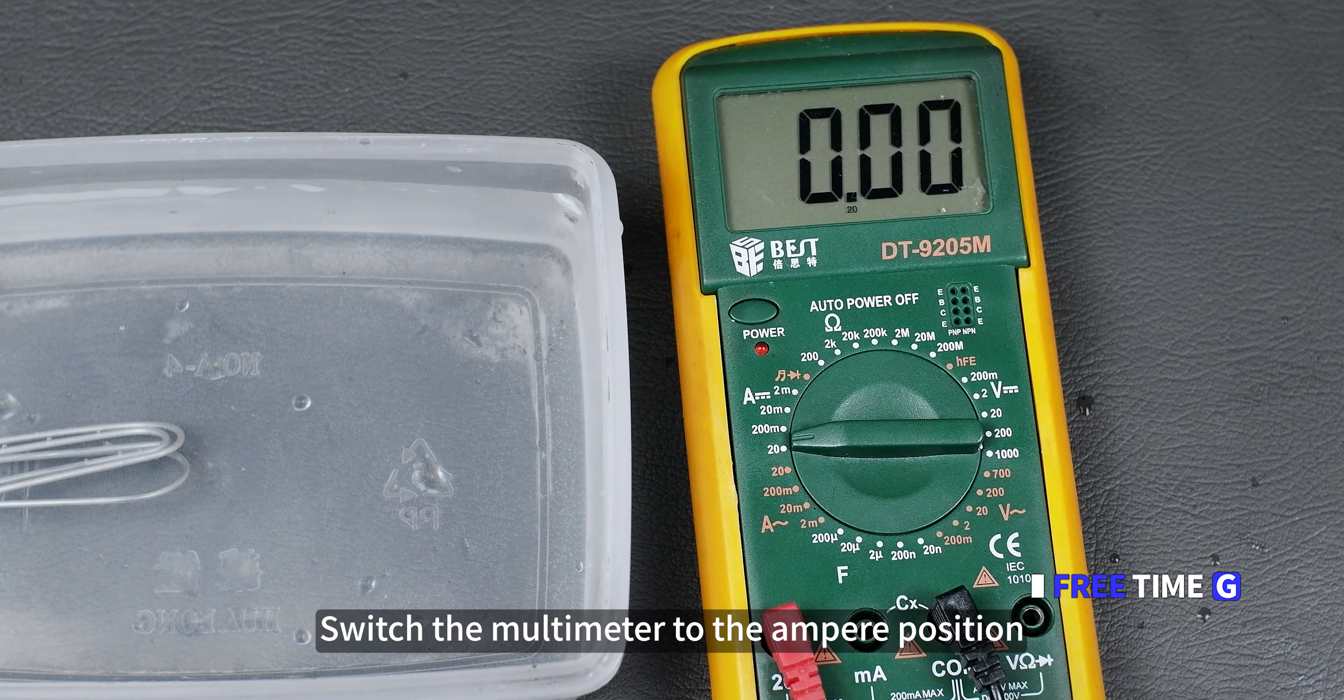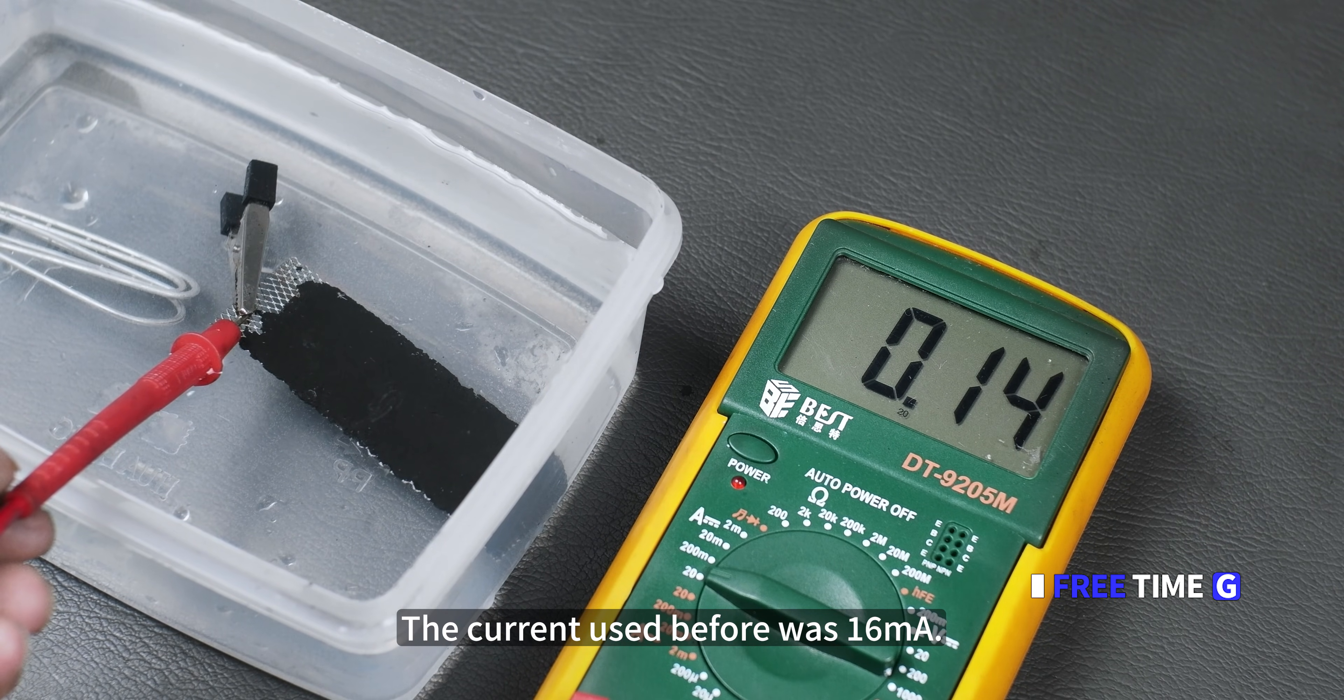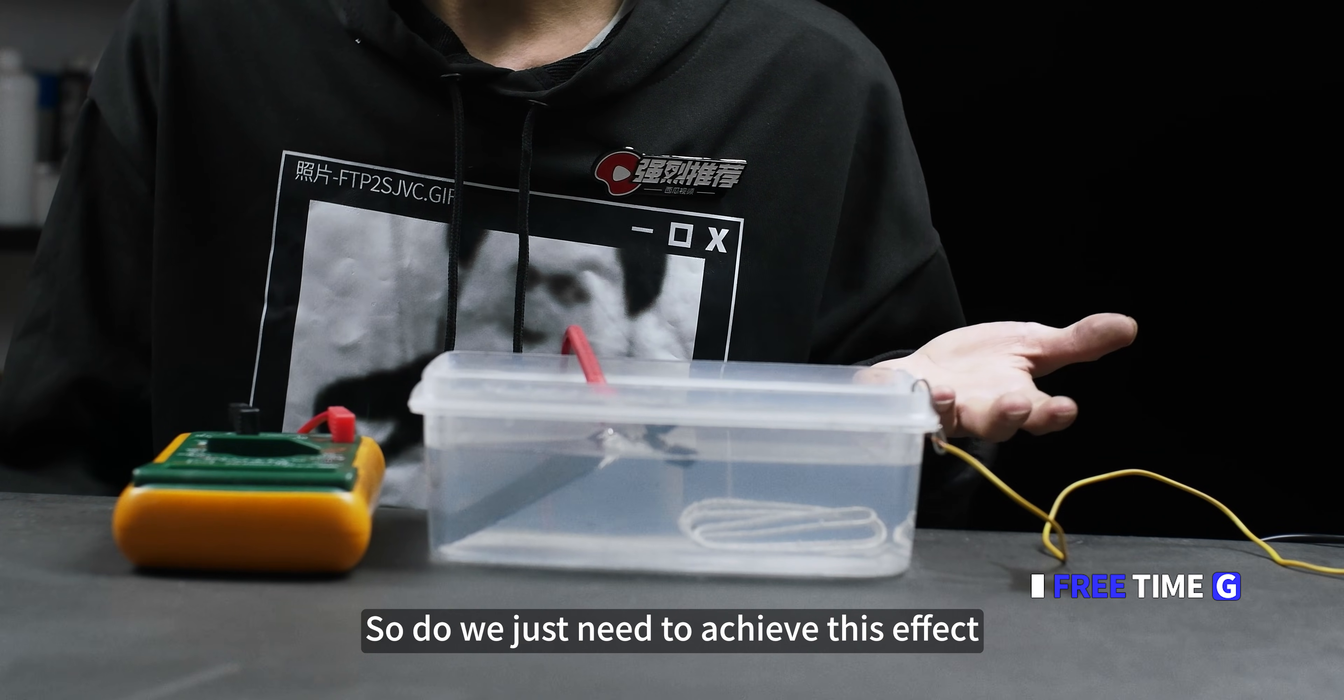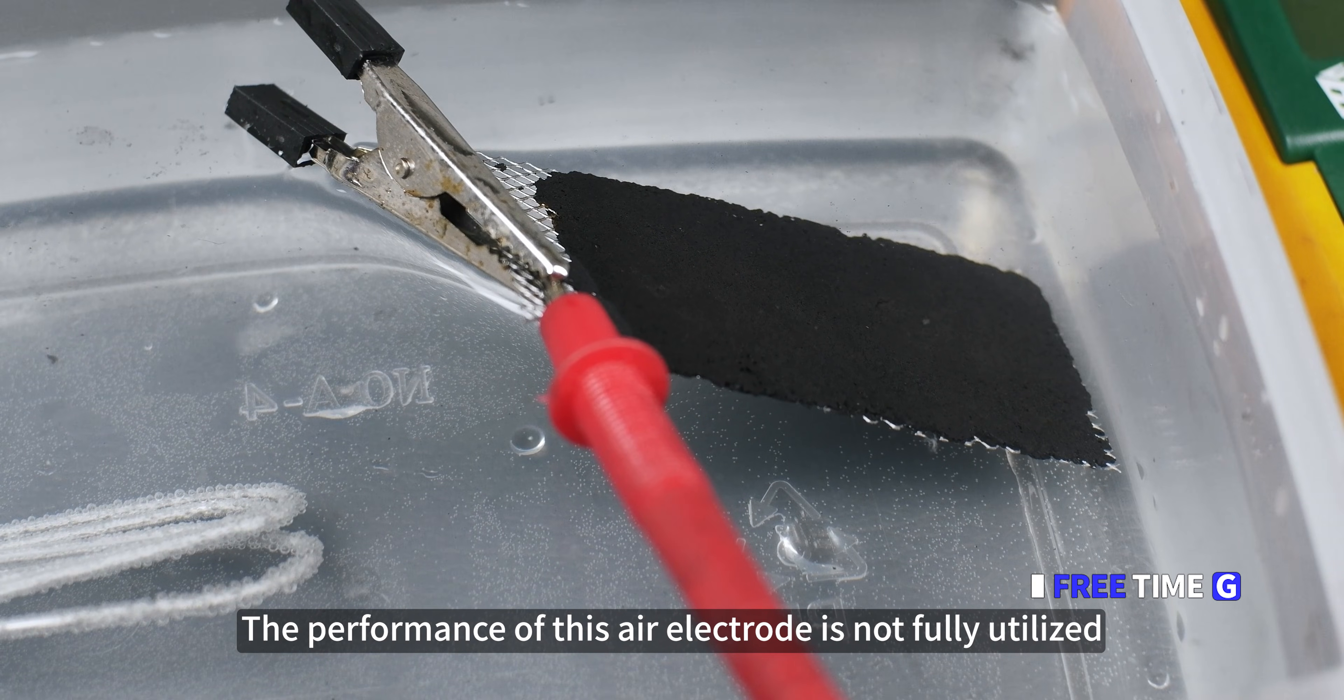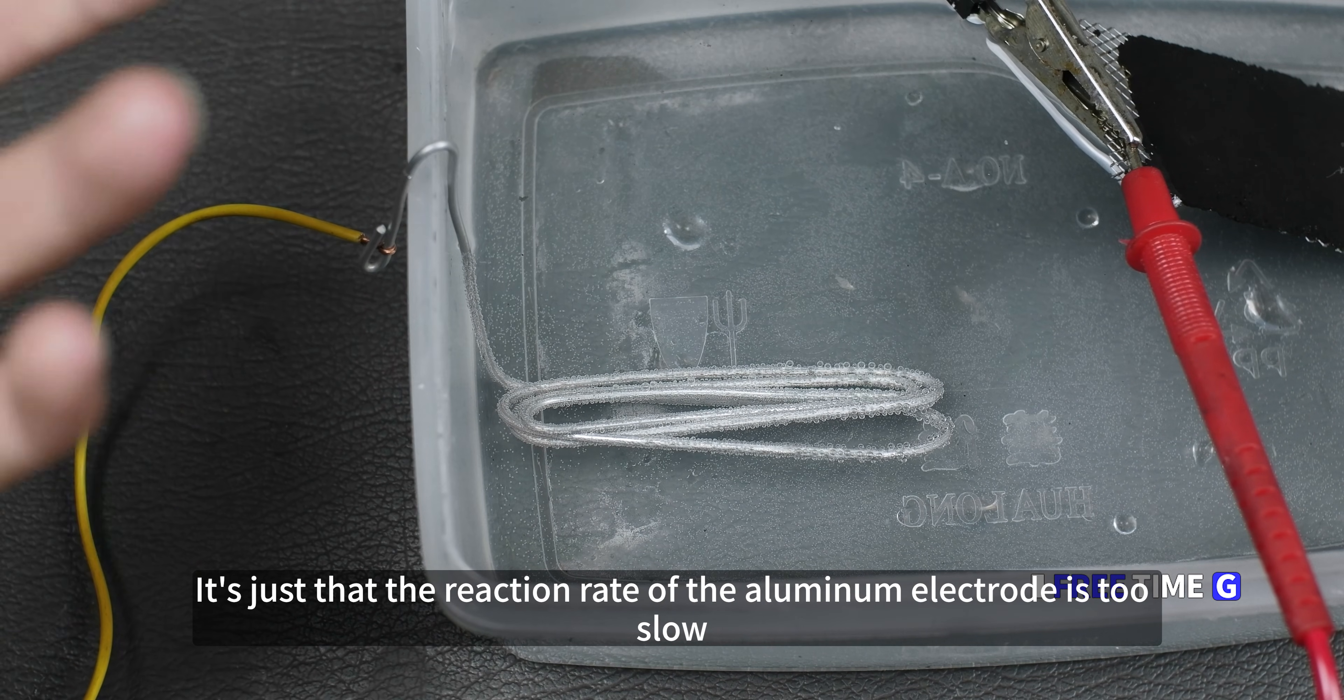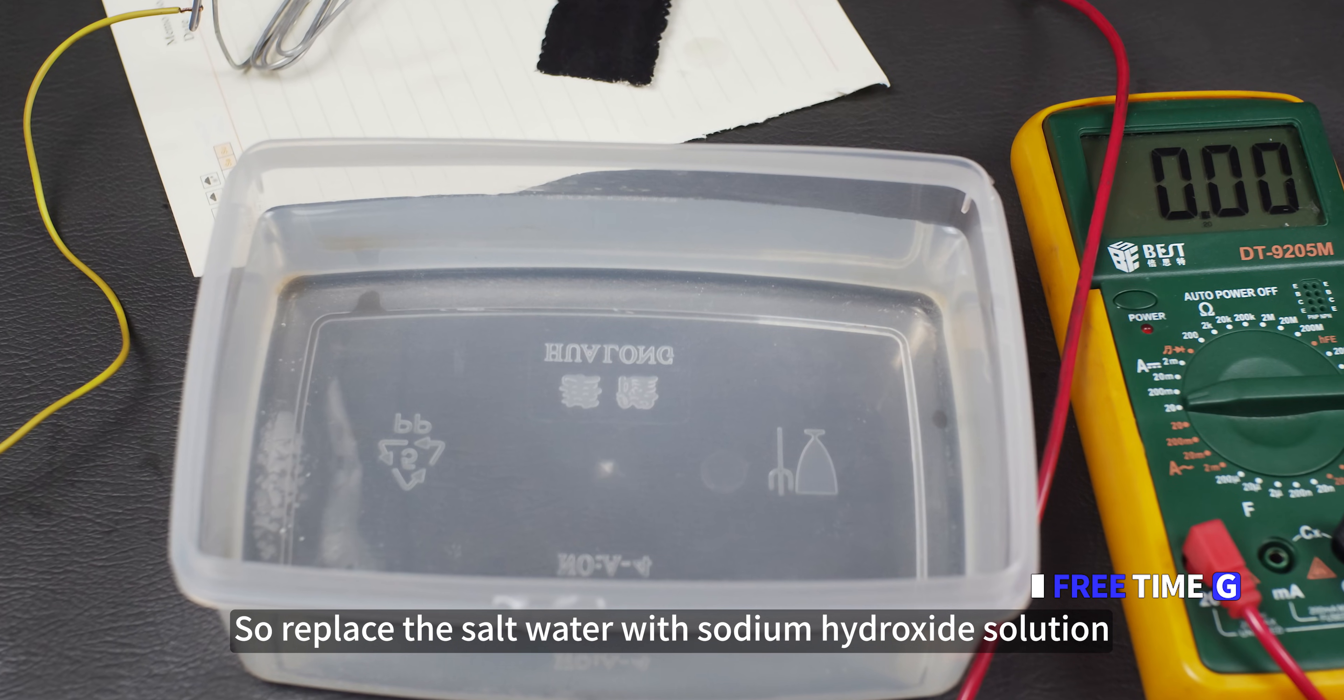Switch the multimeter to the amperage position. Now, the peak current is 140 milliamps. The current used before was 16 milliamps. So, do we just need to achieve this effect? Not really. The performance of this air electrode is not fully utilized. It's just that the reaction rate of the aluminum electrode is too slow, holding back.